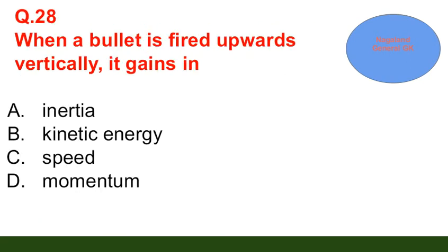Question number 28: When a bullet is fired upward vertically, it gains in — option A: inertia; option B: kinetic energy; option C: speed; option D: momentum. The correct answer is option A — inertia.